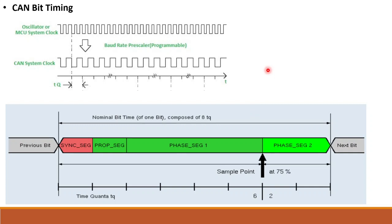The next concept is resynchronization in CAN protocol. For example, on a high-to-low transition at the start bit, if the edge falls after the sync segment, we perform lengthening — we extend phase segment 1. Similarly, if the edge falls before, we perform shortening — we shorten phase segment 2. Phase segment 1 and phase segment 2 are used for resynchronization purposes.